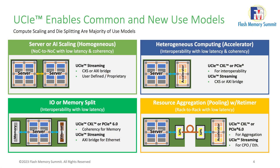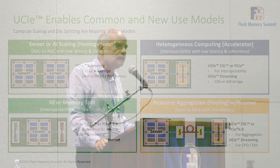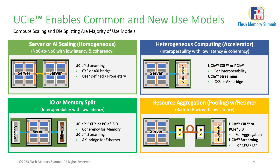The first use case — and the one where we see the most adoption today — is scaling functionality and scaling performance through homogeneous die integration, to get more performance for different types of applications. This is probably the use case we see most often today. It's about flexibility and managing portfolio.